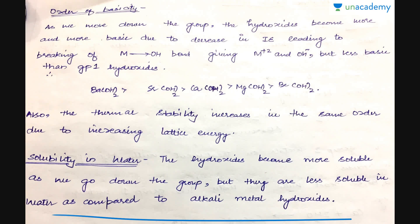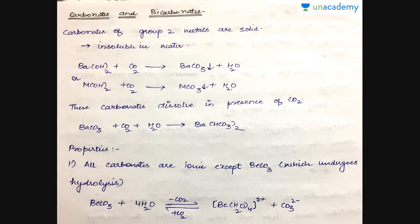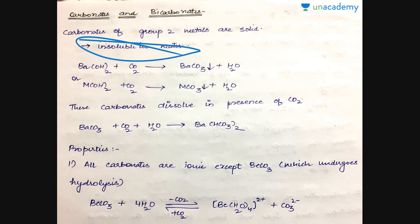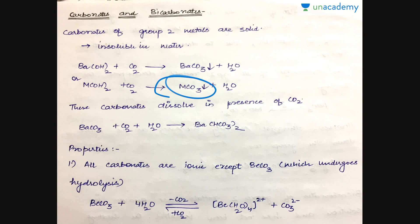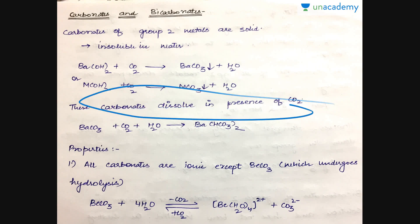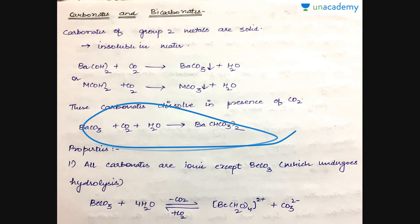The lower solubility compared to alkali metals is due to differences in hydration energies, caused by the variation in size since these ions are smaller than alkali metals. The carbonates of group 2 metals are generally solid and insoluble in water — for example, barium carbonate is easily precipitated. Calcium carbonate and magnesium carbonate are responsible for the hardness of water and are removed by precipitating these hard metal carbonates. These carbonates dissolve in the presence of CO2 and water to form bicarbonates.